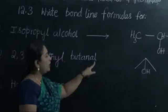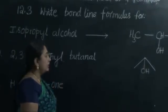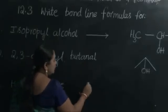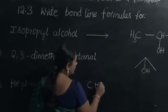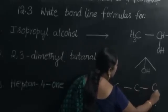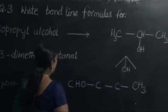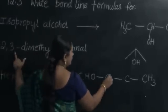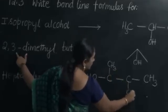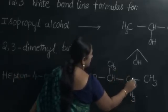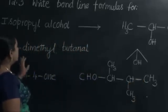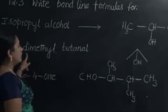The suffix '-al' indicates the presence of an aldehyde group. The first carbon atom itself would be containing the aldehyde group, with the remaining three carbon atoms after it. The second and third carbon atoms are each containing a methyl group. We attach the methyl groups, then balance the carbon atoms. Carbon is tetravalent, so its tetravalency has to be matched. This is the expanded structure of the given organic compound.